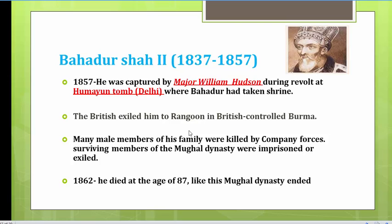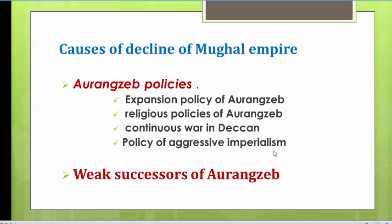We have discussed all the later Mughals from Bahadur Shah I, who assumed the throne after Aurangzeb, till Bahadur Shah II, the last Mughal emperor. All these later Mughals were so incapable that various mistakes led to the fast degeneration of the Mughal Empire. Now let us discuss the various causes of the decline. Starting from Aurangzeb himself — his policies were not apt and led to the start of the decline.